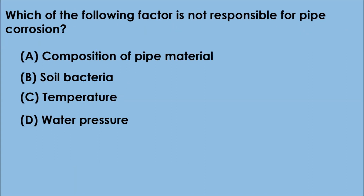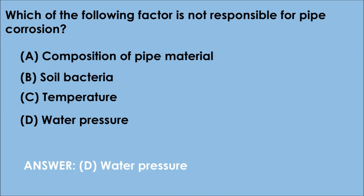Question 6. Which one of the following factors is not responsible for pipe corrosion? The correct answer is option D — water pressure is not a factor responsible for pipe corrosion.